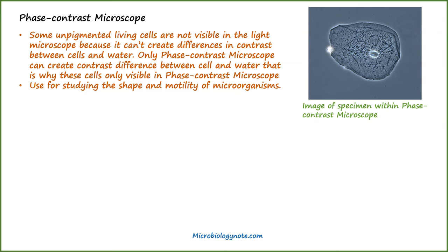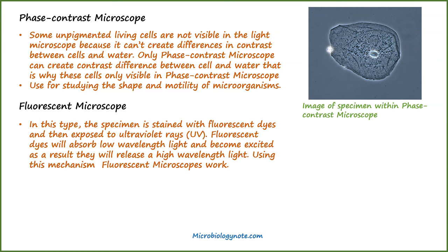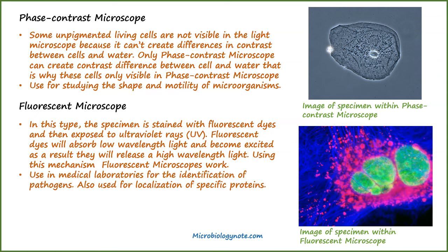The last type of light microscope is the fluorescent microscope. In this type, the specimen is stained with fluorescent dyes and then exposed to ultraviolet rays. Fluorescent dyes absorb low-wavelength light and become excited; as a result they release high-wavelength light. Using this mechanism, fluorescent microscopes work. These types of microscopes are used in medical laboratories for the identification of pathogens, and also for the localization of specific proteins.